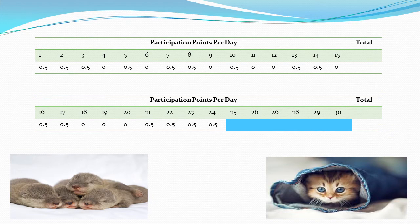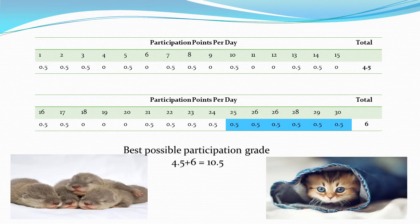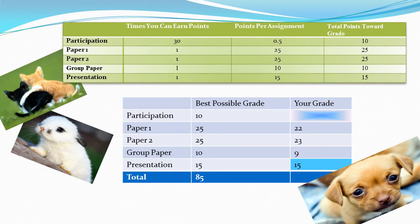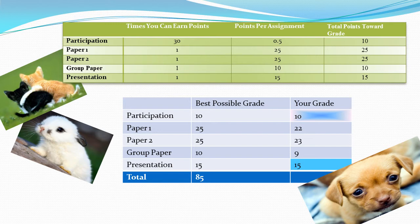Say there are 30 days in the semester and you've gone through 24 days. You have grades through day 24 and no grades yet for days 25 through 30. You put in the best possible grade for those remaining days. Your best possible participation grade comes out to 10.5. But since 10.5 exceeds the maximum participation points allowed, it becomes a 10 — you can't earn more than what's set in the syllabus. Summing everything up, you get 79 out of 85 points, which is a best possible grade of 92.9%.